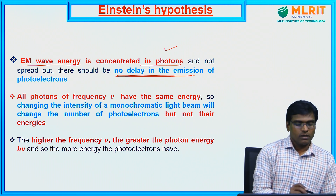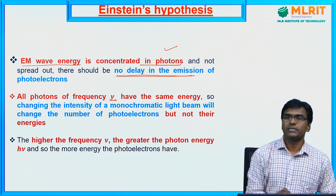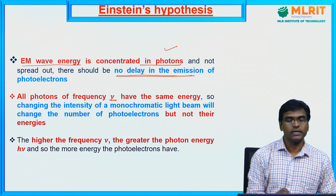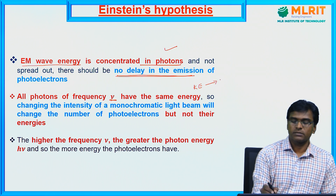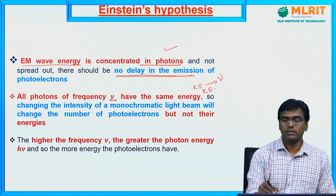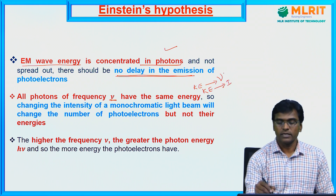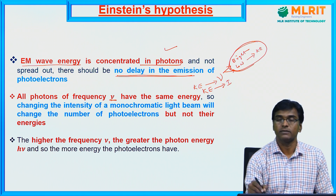The second point: all photons of frequency ν have the same energy. So changing the intensity does not have any effect on the kinetic energy of the ejected electrons. The kinetic energy of the electrons depends on the frequency of the incident light, not on its intensity. Irrespective of the intensity, the kinetic energy is the same for a given frequency of light.